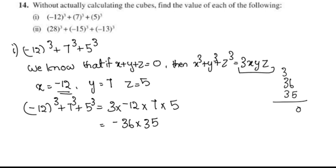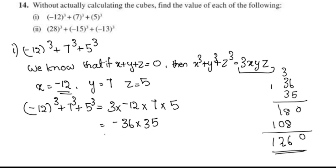3 into negative 12 is negative 36, into 7 into 5 is 35. Negative 36 into 35 gives negative 1260.